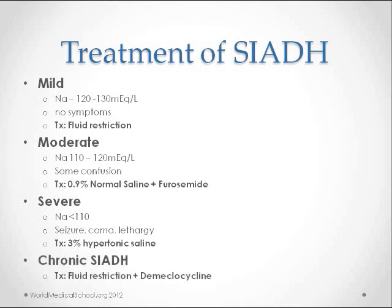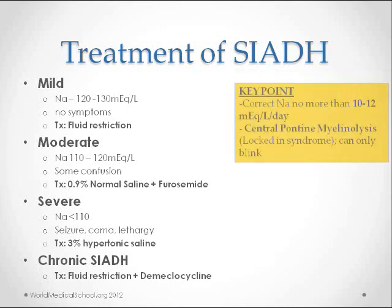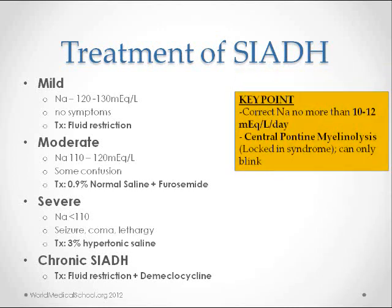For chronic SIADH, fluid restriction with demeclocycline can be used. Demeclocycline works by reducing the responsiveness of the collecting tubule cells to ADH. A key point to note is that while correcting sodium level, one should not correct too rapidly — no more than 10 to 12 milliequivalents per day. This might lead to central pontine myelinolysis, or locked-in syndrome, where the patient can only blink their eyes but cannot move.